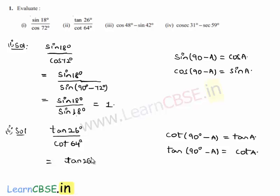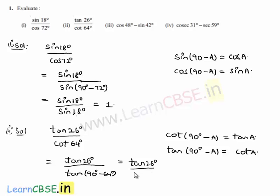The numerator is already in terms of tan — that is tan 26°. The denominator cot 64° can be written as tan(90° − 64°), which is nothing but tan 26°. As numerator and denominator are the same, tan 26° divided by tan 26° is equal to 1.